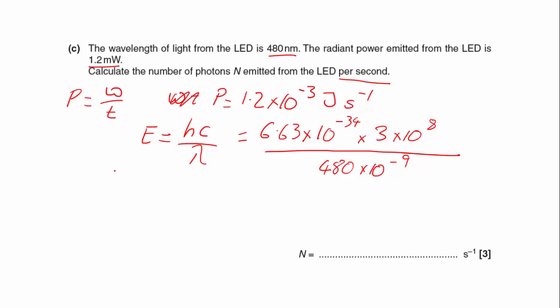And then if I work out what the power is divided by the energy of the photon, that will tell me the number of photons per second. So 1.2 times 10 to the minus 3, and that gives me an answer.